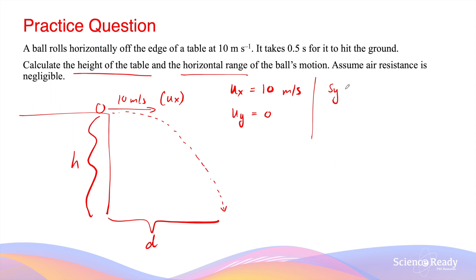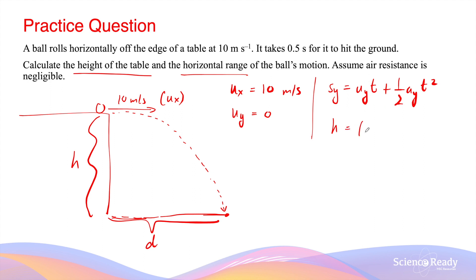We can do this by using Sy = uyt + ½·ay·t². Here, Sy is the vertical displacement — this corresponds to h, measured down to the ground, which allows us to find the height of the table. The initial vertical velocity is 0, and time is 0.5 seconds, plus half times ay, the vertical acceleration, which we assume is −9.8 m/s², times 0.5 squared.